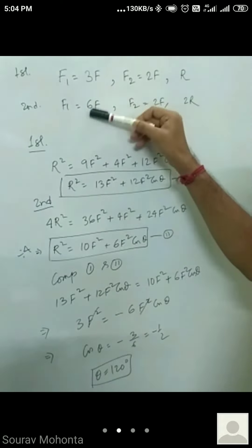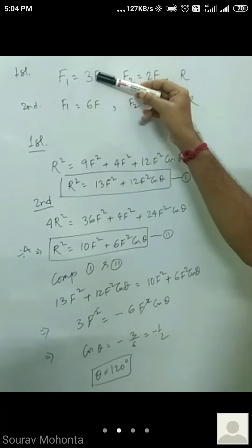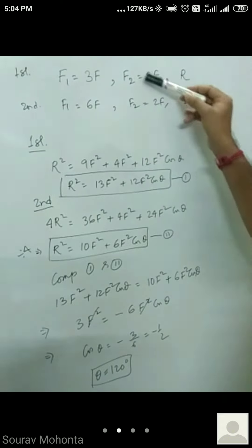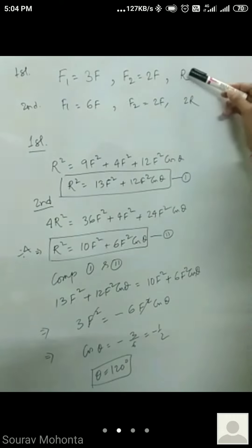In the second case, if the first force is doubled, that means if 3F becomes 6F, but second force same, 2F, then the resultant will also be doubled. So R becomes 2R.